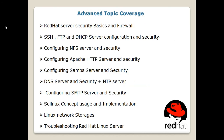Advanced topic coverage includes Red Hat server securities and server configurations. It includes SSH, FTP, DHCP server, NFS server, Apache server, and Samba server. These are all advanced level servers and we will discuss each in complete detail, from zero level to advanced level, involving security of the server — not only configuring but also how to securely configure it. Then DNS server, NTP server, SMTP server which is basically the mail server, SELinux concept and implementation, Linux network storage, and troubleshooting of the Red Hat Linux server.